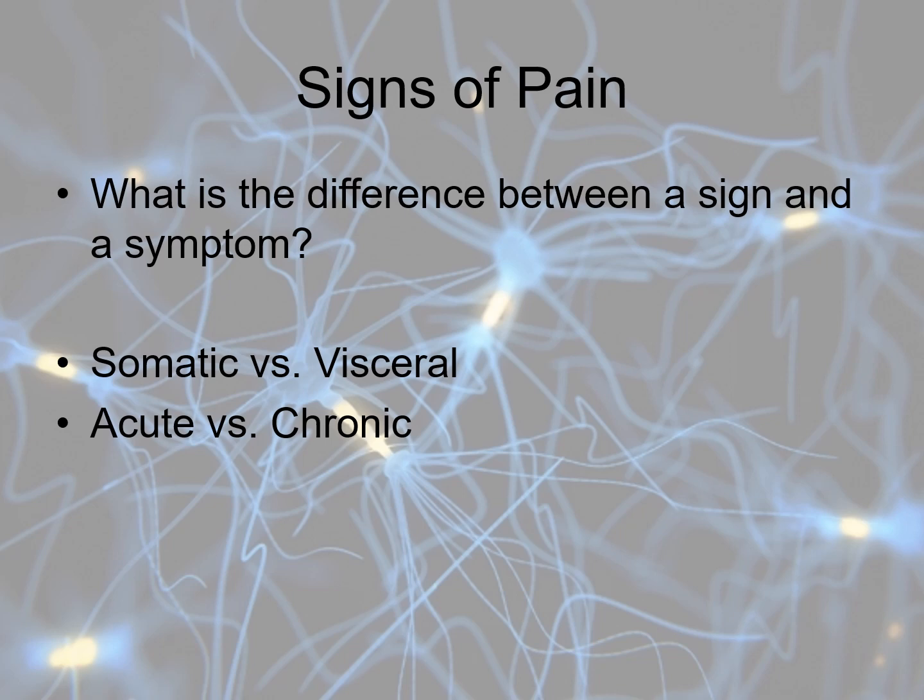A sign is something you can see; a symptom is something the patient tells you. Somatic pain, such as muscle pain, will be sharp — it hurts a lot. Visceral pain is much more low-grade and dull-aching, because there are far fewer receptors in the viscera and organs, so abdominal pain is much more diffuse and harder to localize. We've already discussed the difference between acute and chronic pain.